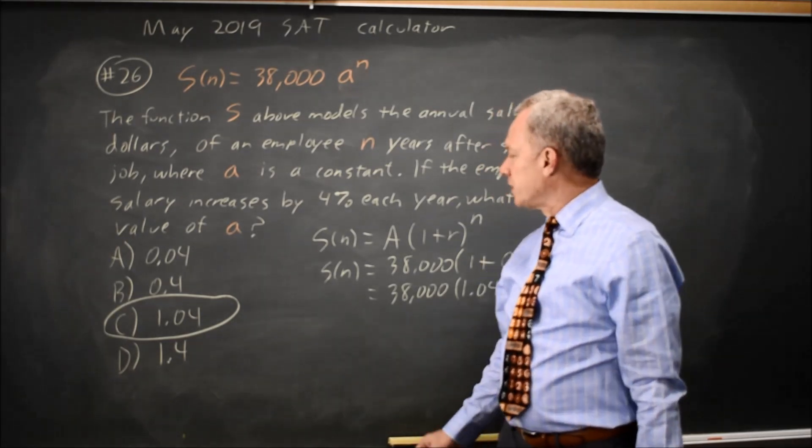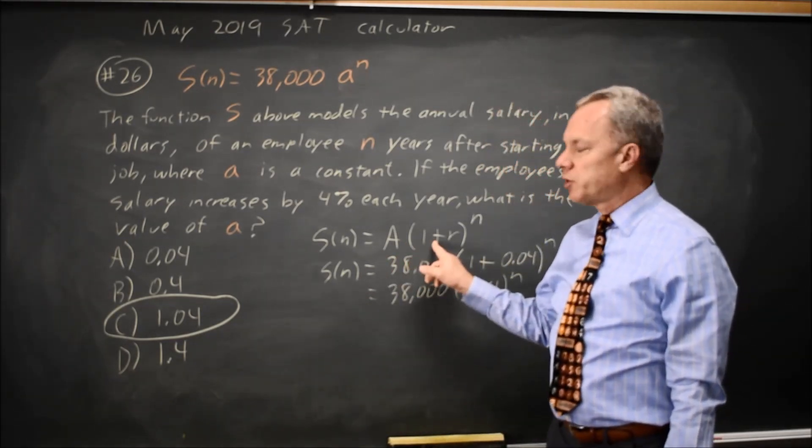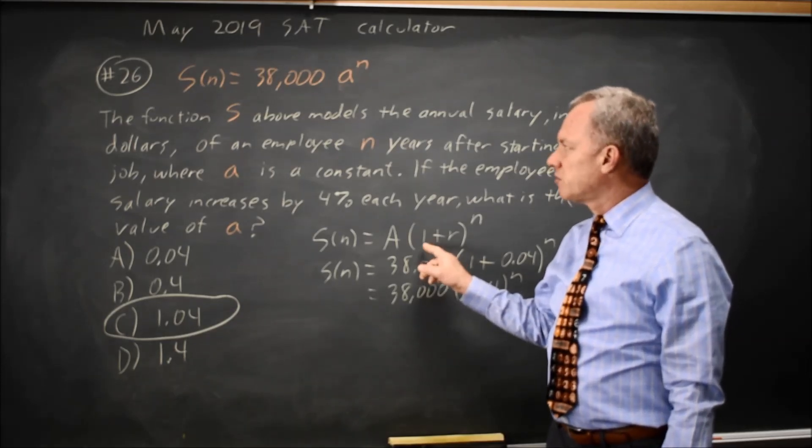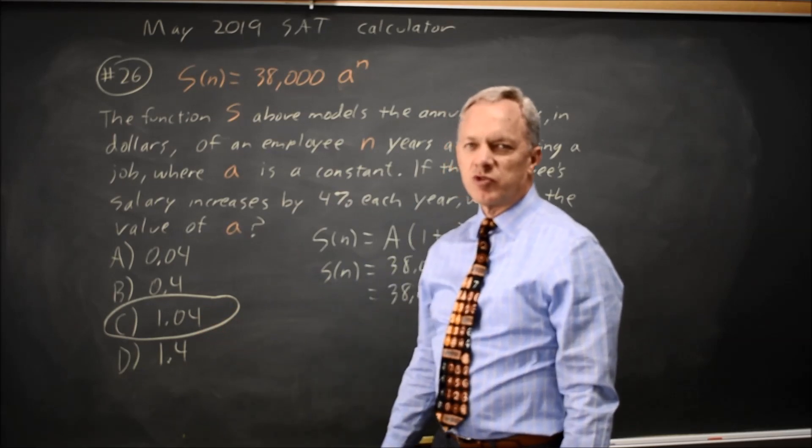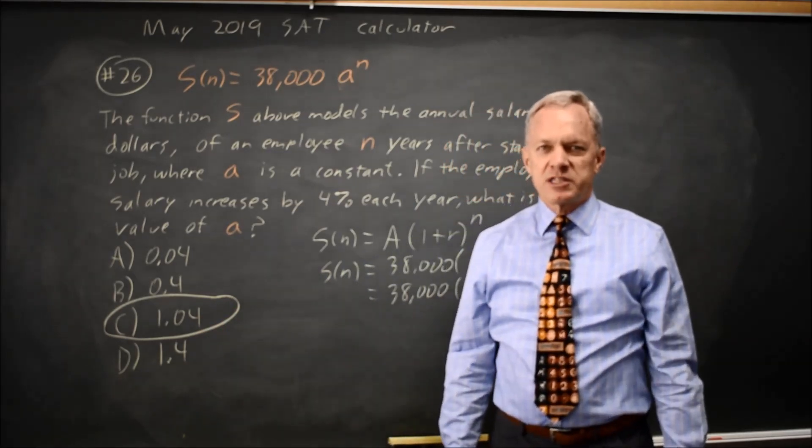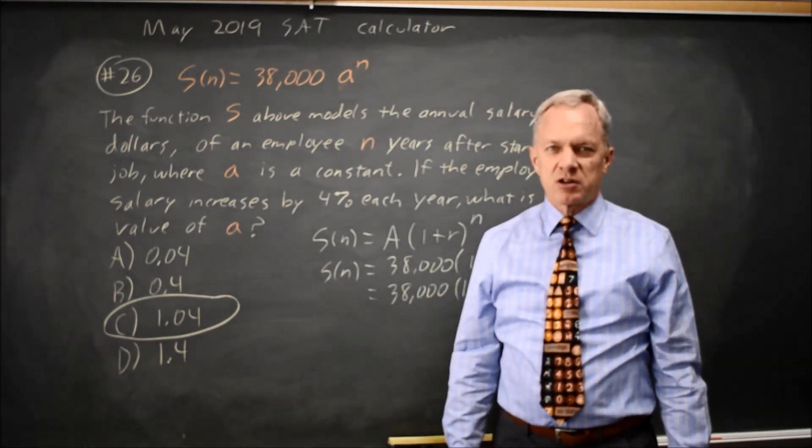You should be able to write this equation directly as 1 plus R to the N to find that the base here, A, is 1.04 for 4% growth, but we always have the backup of checking the pattern on the calculator.